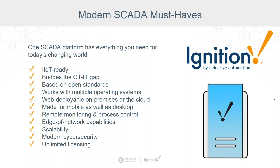It supports remote monitoring and process control. Ignition lets you easily set up remote connections to anything in your enterprise and build out web applications for mobile devices and desktops. It easily allows you to bring in data from the field and edge devices, add capabilities like reporting, alarming, and enterprise administration, and lets you increase your number of tags and connections without going over budget, thanks to the unlimited licensing model built directly into Ignition.